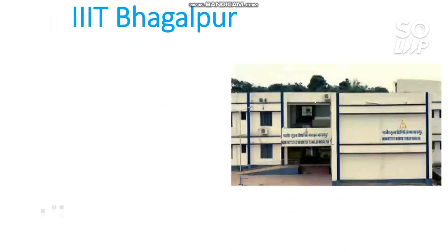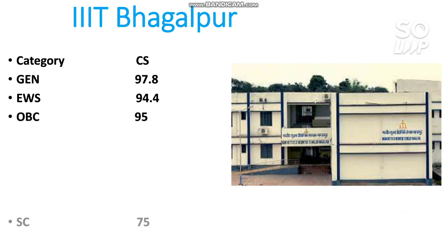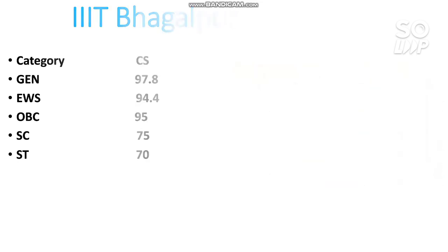The next is IIIT Bhagalpur. Here is the category-wise cutoff for CS: General requires 97.8, EWS 94.4, OBC 95, SC 75, and ST 70 percentile is required.